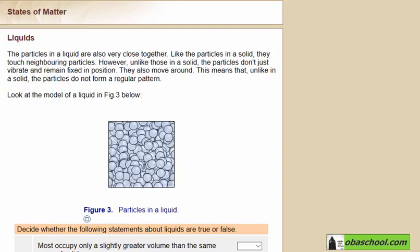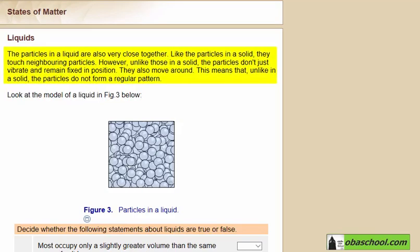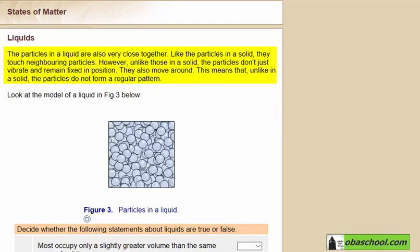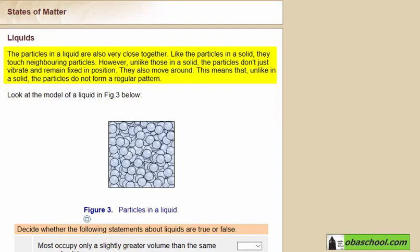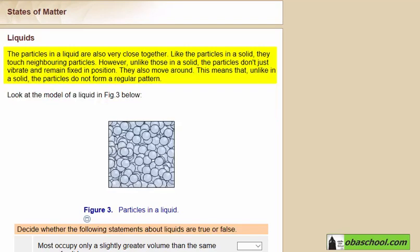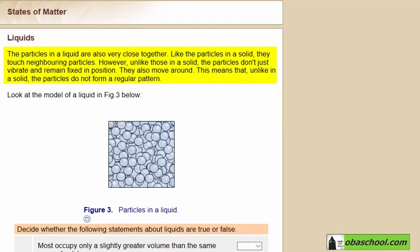Let's now describe the liquid state. The particles in a liquid are also very close together. Like the particles in a solid, they touch neighboring particles. However, unlike those in a solid, the particles don't just vibrate and remain fixed in position. They also move around.